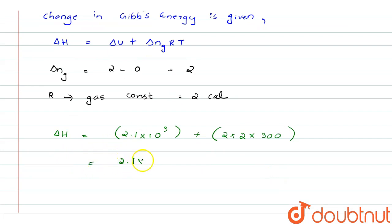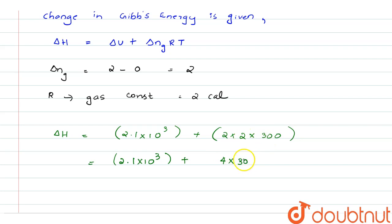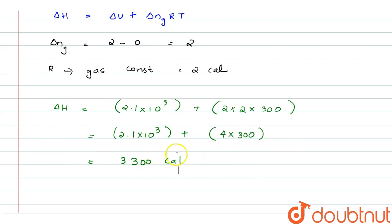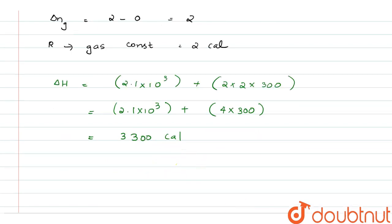So ΔH equals 2.1 into 10 raised to 3, plus 2 into 2 into 300, which is 4 into 300 equals 1200. When we solve this, we get 3300 calorie.